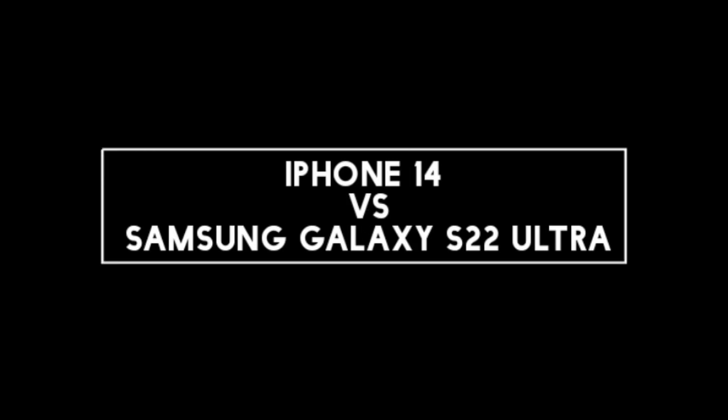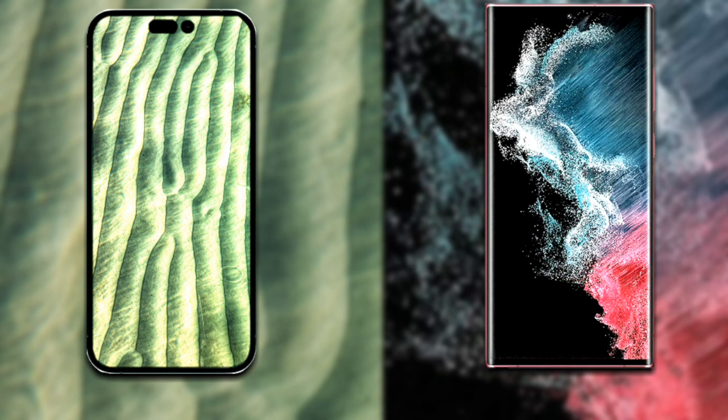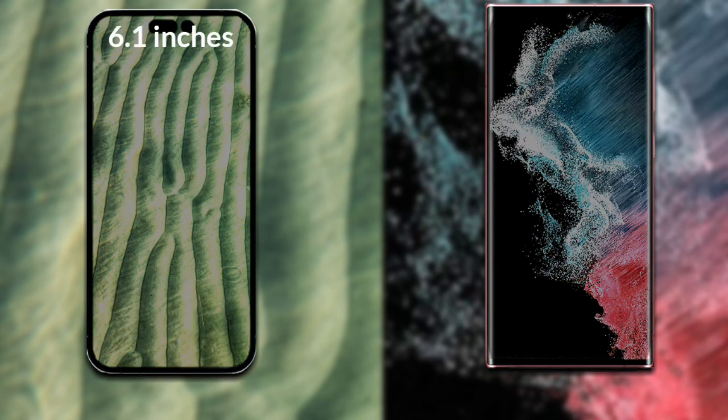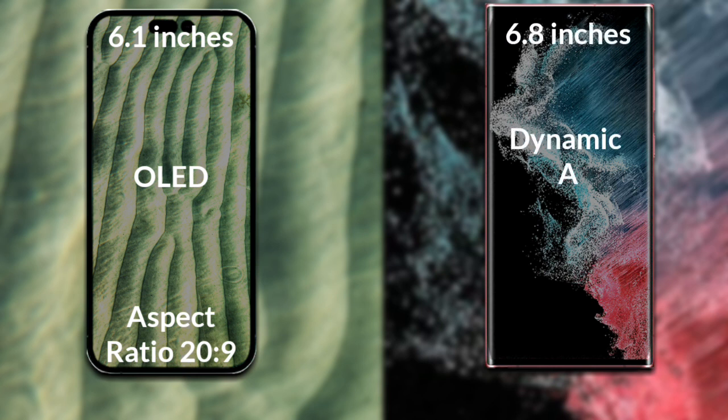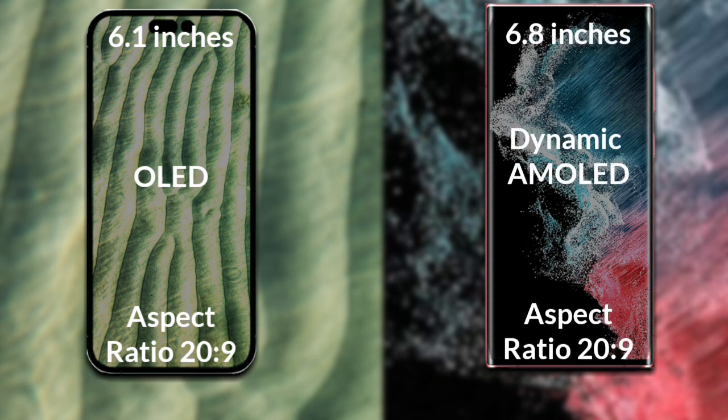I will compare the new iPhone 14 with the Samsung Galaxy S22 Ultra. Let's talk about the display. The iPhone 14 has a 6.1-inch Full HD AMOLED LCD with an aspect ratio of 20:9. The Samsung Galaxy S22 Ultra has a 6.8-inch Full HD Dynamic AMOLED display with an aspect ratio of 20:9.